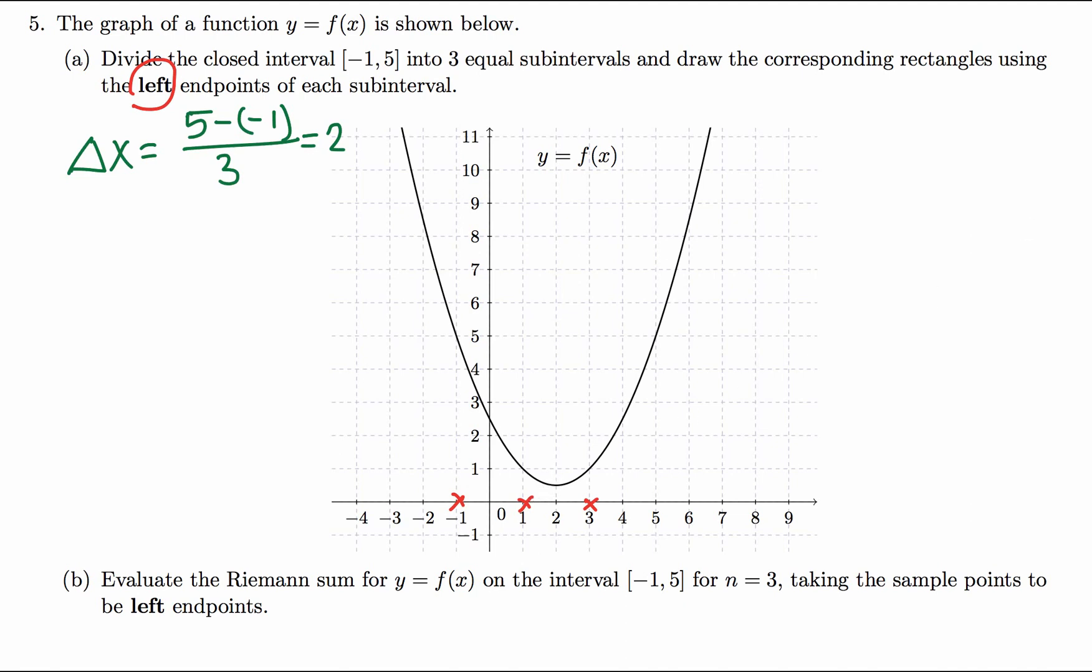Now let's draw the rectangles. From negative 1, go all the way up to the curve so that's here, the height 5, and draw parallel to x-axis from here. So that's the first rectangle of width 2 and height based on negative 1.